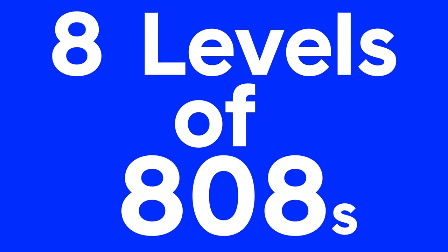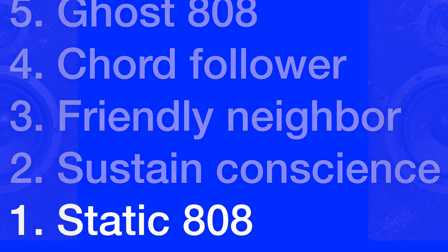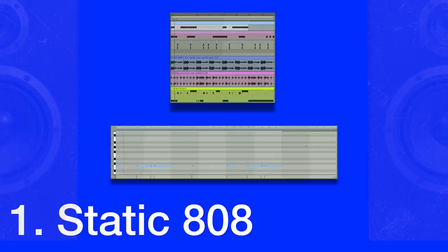The 8 Levels of 808s. The first level of 808 is the static 808. It's not too ambitious and basically outlines the kick on the root note. While it's a little bit more risk-averse, it sometimes can be found on the fifth scale degree.